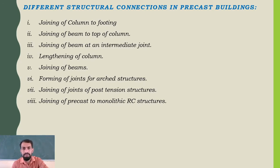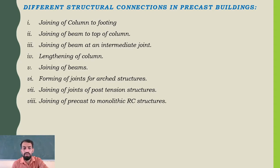Now the question comes: if all these elements are separated, dismantled, or all the elements are cast separately, then how about the joints? Here comes the most important question — how will the joints be if most of the things are not in proper manner?